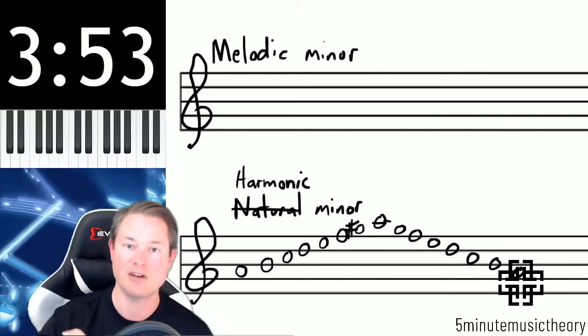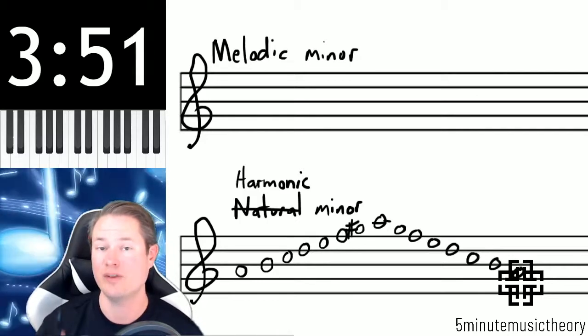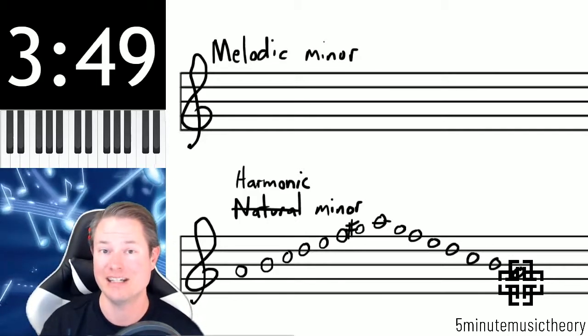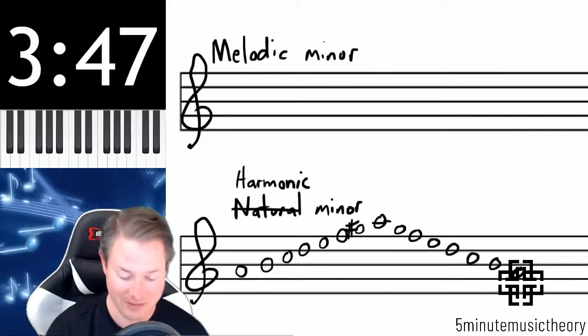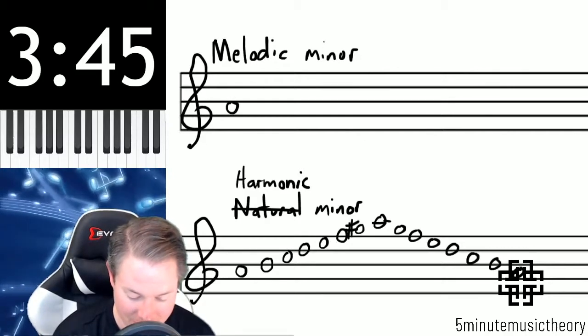Now the reason I wrote this going up and down is because melodic minor is the only scale that we ever run across that's different when it's ascending versus descending. So I'm going to write the ascending and descending version of the natural minor and then I'll show you the differences.